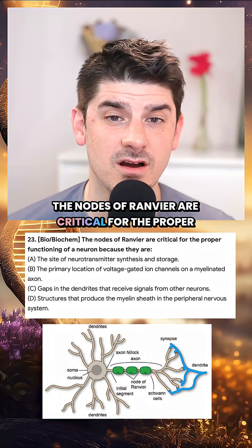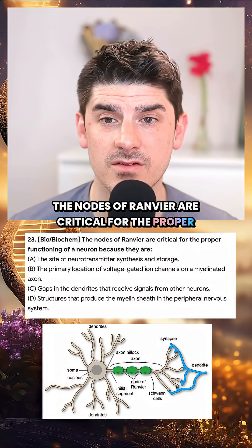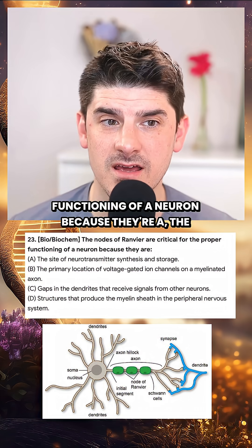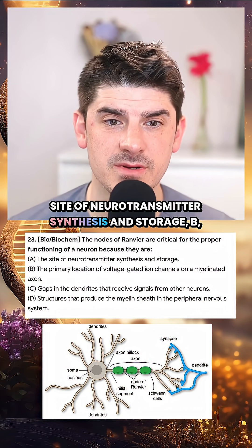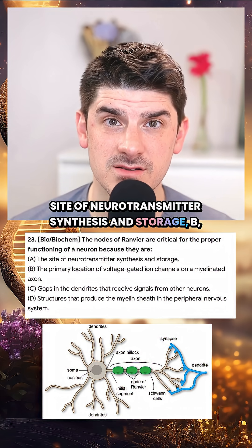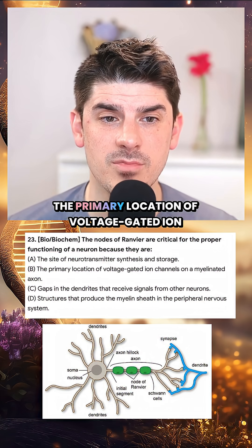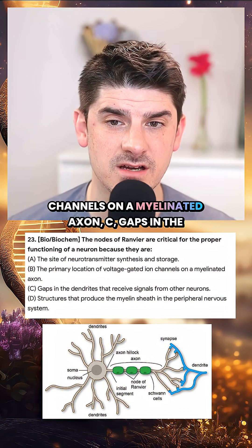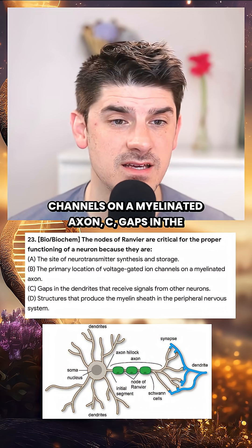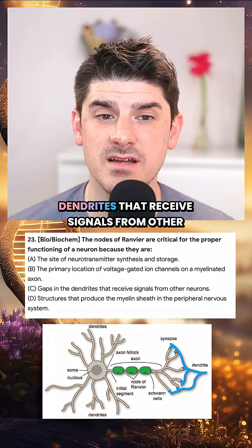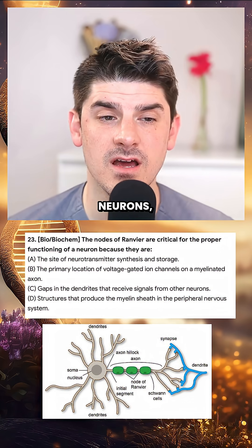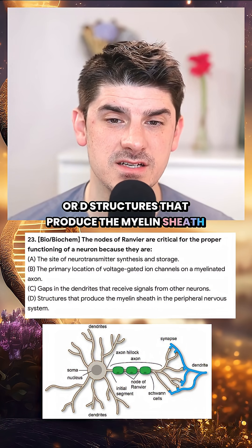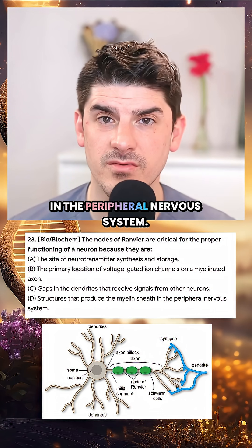The nodes of Ranvier are critical for the proper functioning of a neuron because they're: A, the site of neurotransmitter synthesis and storage; B, the primary location of voltage-gated ion channels on a myelinated axon; C, gaps in the dendrites that receive signals from other neurons; or D, structures that produce the myelin sheath in the peripheral nervous system.